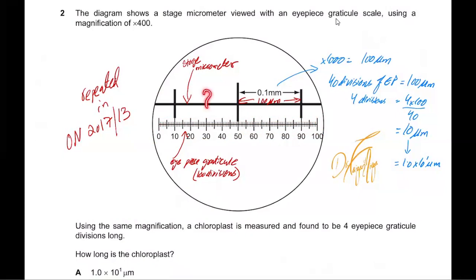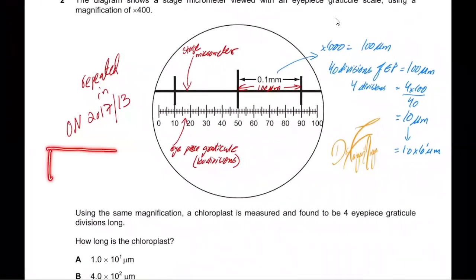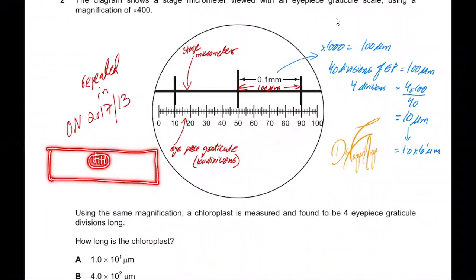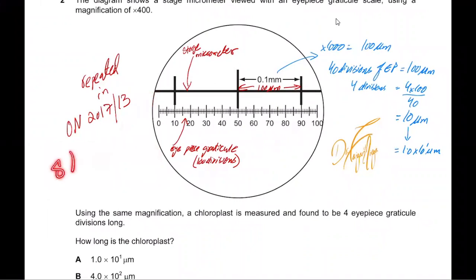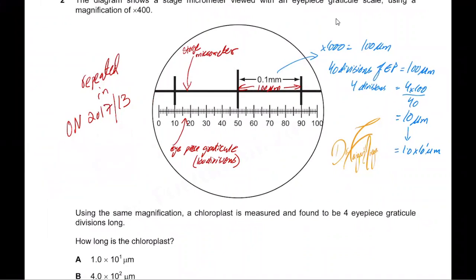What is a stage micrometer? A stage micrometer is actually a glass slide which we place on the stage. Normally you would have a specimen on a glass slide, but in this case we have a scale etched on the glass slide — and this is a stage micrometer. This slide is placed on the stage of the microscope, and you can use any combination of lenses to view it.